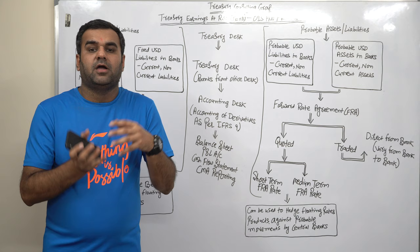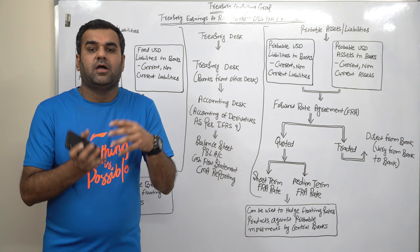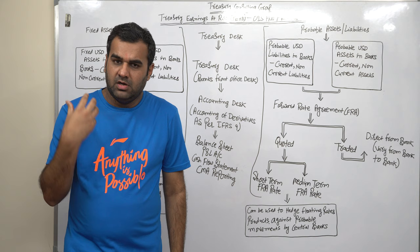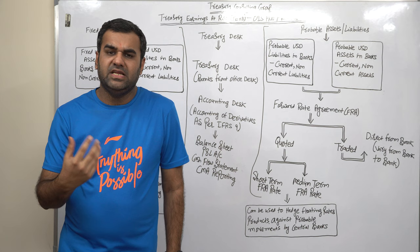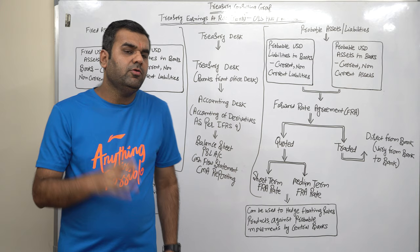While Apple is completely technological based company, Amazon is having e-commerce and technological. So Treasury matters. So our framework, which is Treasury Earnings at Risk, will let the corporate treasuries know that how much you are losing, actually how much you are losing, because you are not managing the Treasury the way you should be managed.